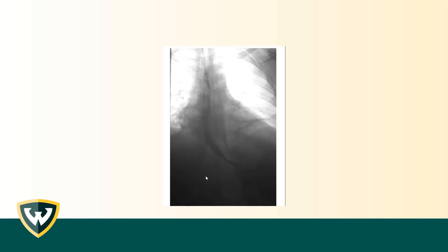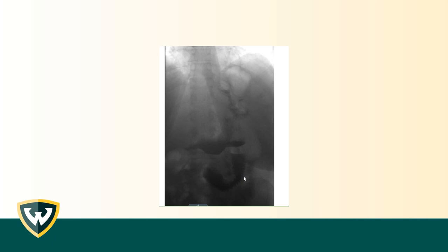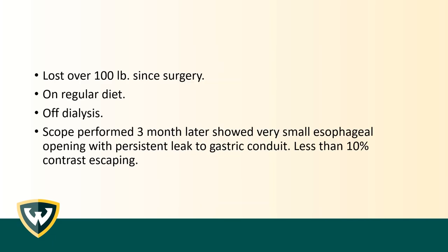However, in the delayed images you can see some contrast in the gastric remnant — radiology estimated about 10%. Most of the contrast goes down the proper route. The fistula is between the stomach, the cavity, and then the esophagus — not direct mucosa-to-mucosa contact. She lost over 100 pounds since this all happened and is on a regular diet. She is completely off dialysis. A scope performed three months later showed a very small esophageal opening with a persistent but small gastric leak seen only on delayed images.